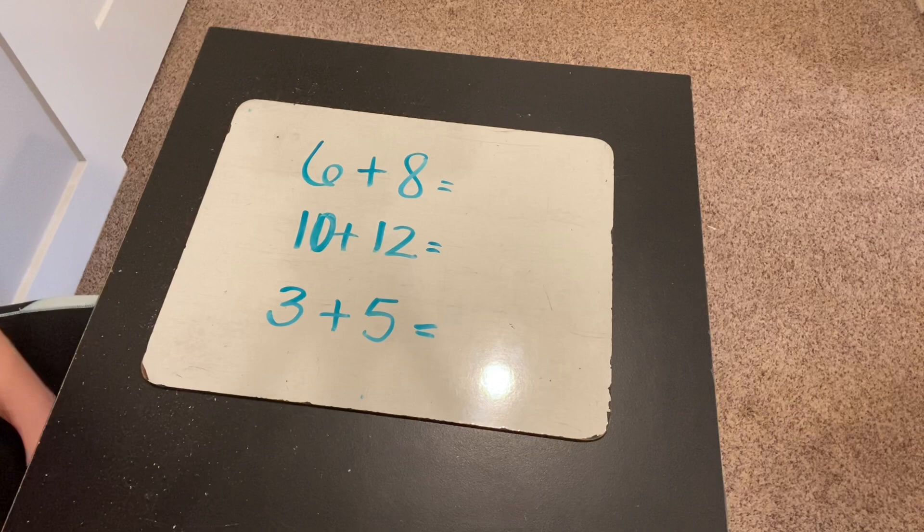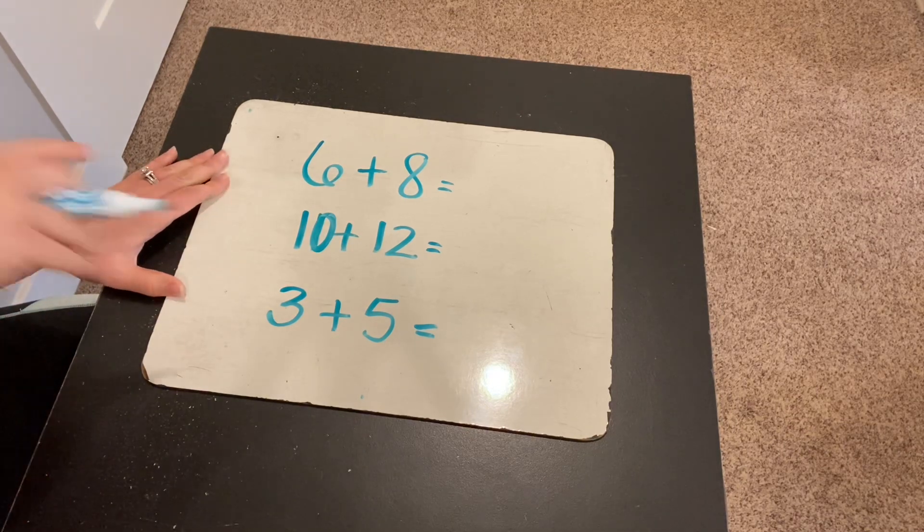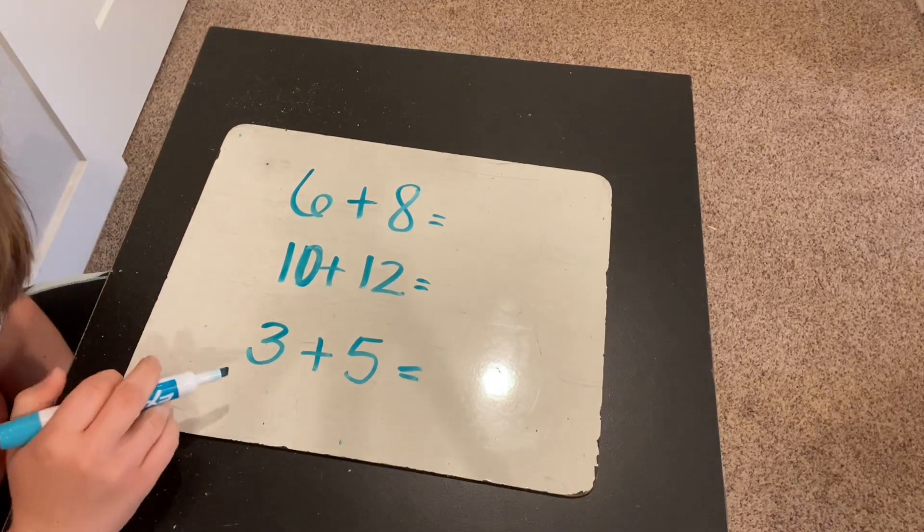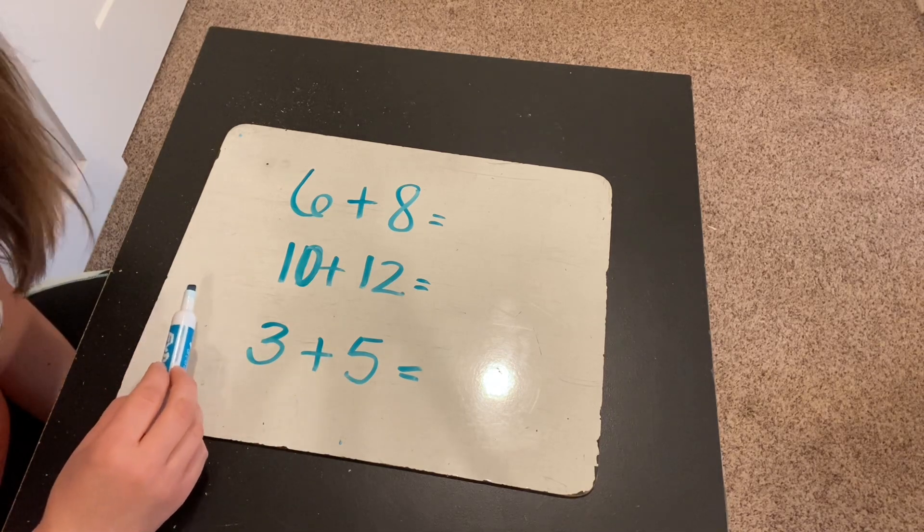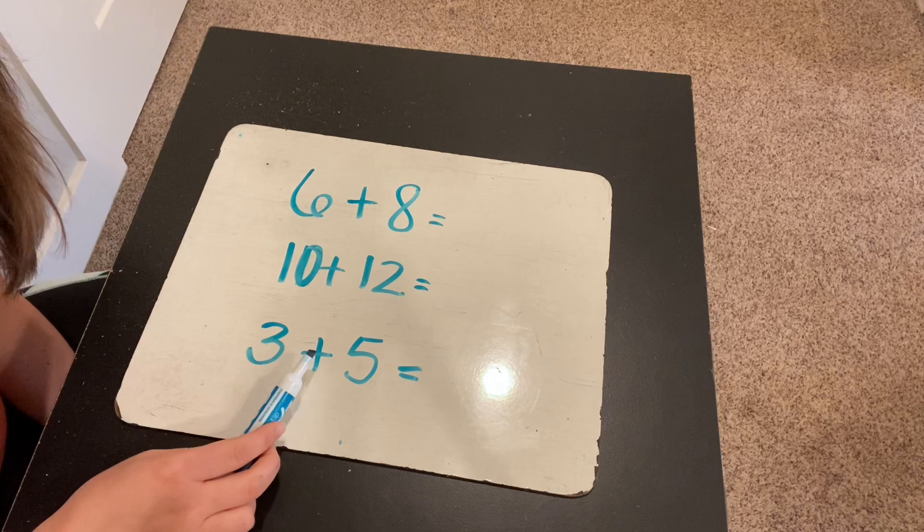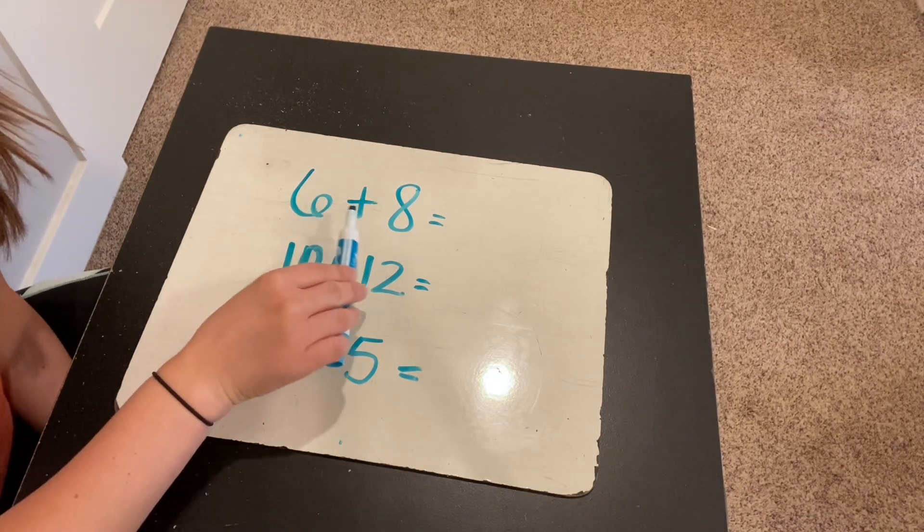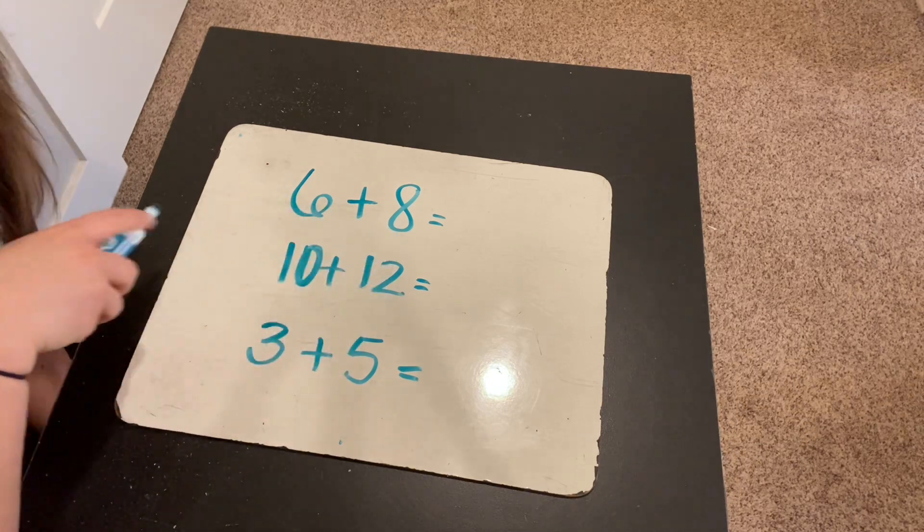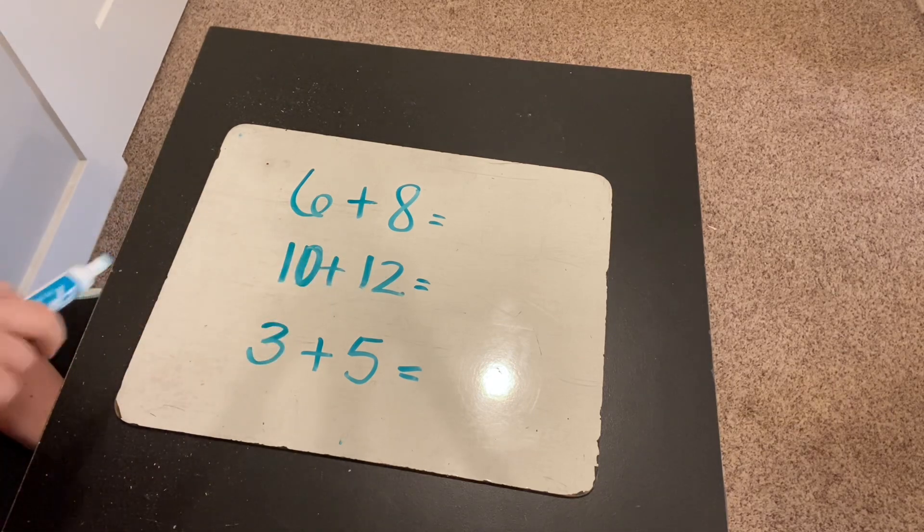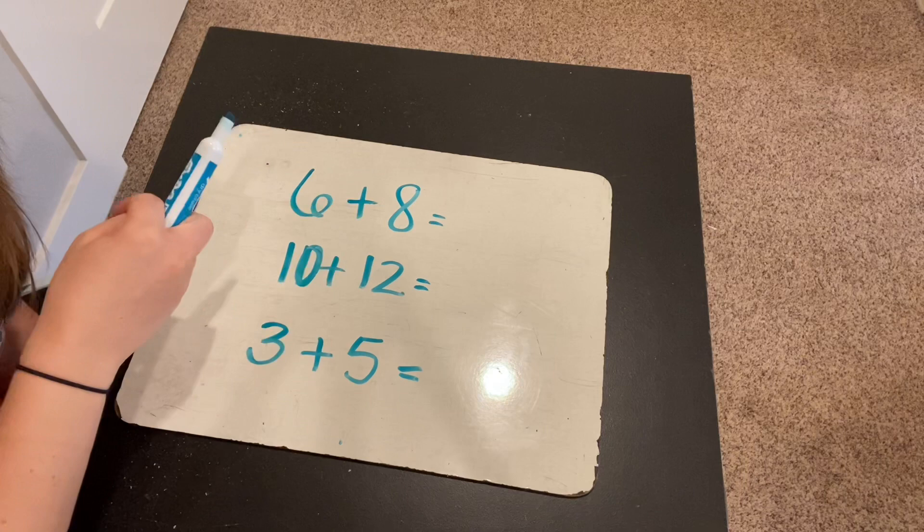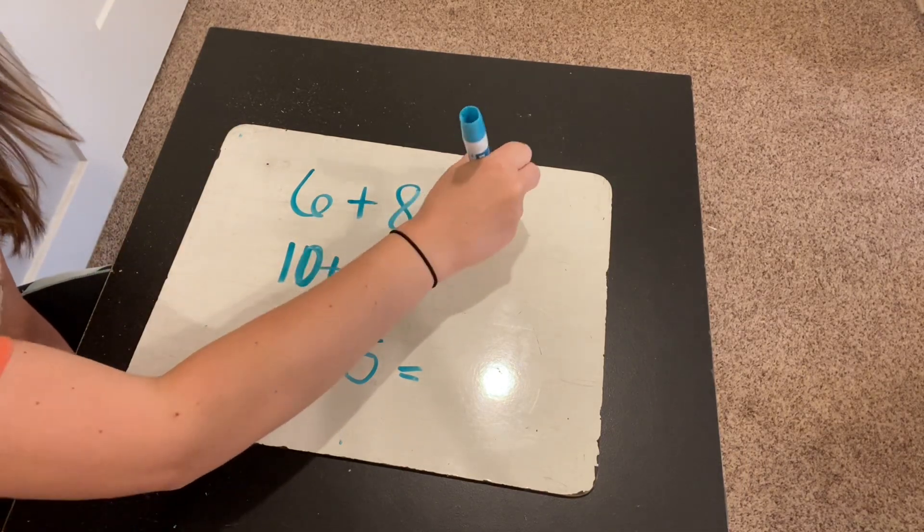Okay, so here are some math facts that I have, and we're going to practice using the between fact strategy on them. So remember, to use the between fact strategy, the two numbers have to have one number that comes in between them on the number line. So 6 and 8 have one number that is between them. What number is that? They have the number 7 between them on the number line. So you just have to double 7. What is 7 plus 7? 7 plus 7 is 14. 6 plus 8 is 14.